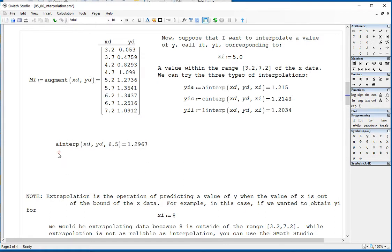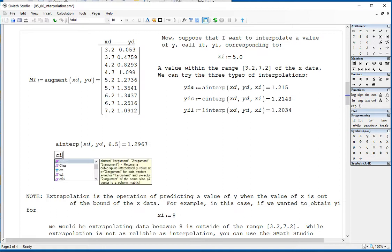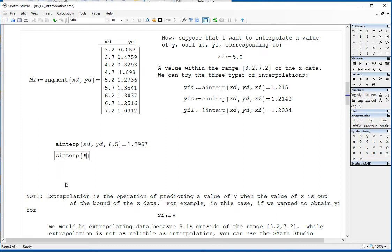As you can see here, 6.5 will be between 6.2 and 6.7, and should be between 1.134 and 1.25, and I'm getting 1.2762. If I use c interp as the cubic spline interpolation for that 6.5, I get equal 1.2972. And if I want my linear interpolation, l interp 1.2888.